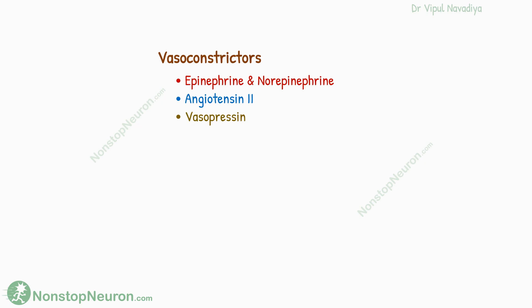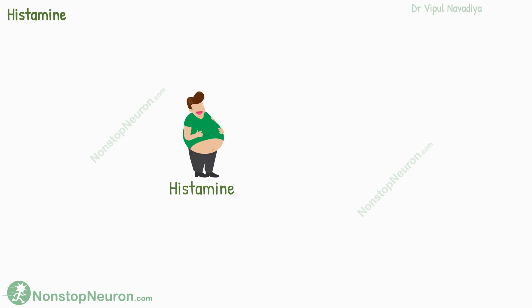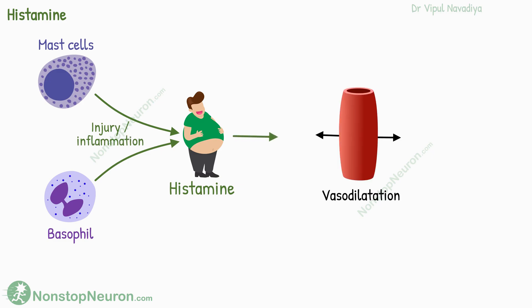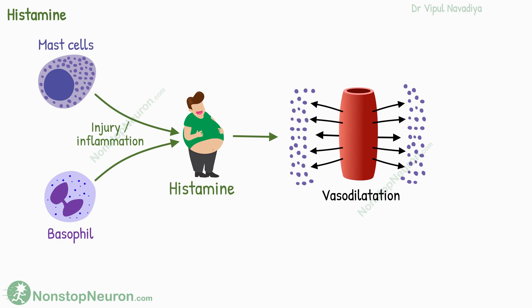The factors we saw thus far mainly cause vasoconstriction. Now let's see the factors causing vasodilation. First we have histamine. It's released by mast cells and basophils in response to injury and inflammation. It causes vasodilation and increases capillary permeability, which produces edema. This effect is prominent especially during allergic reactions.